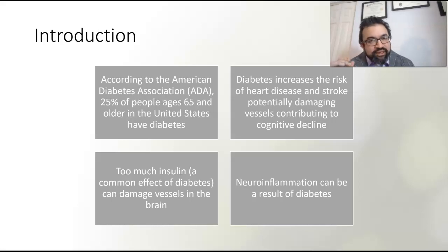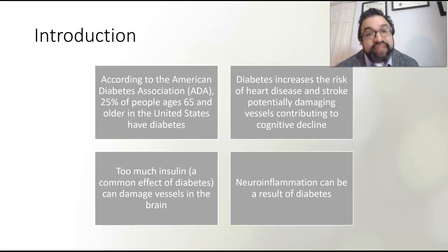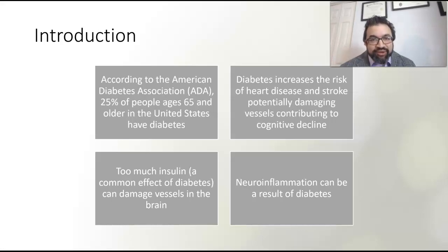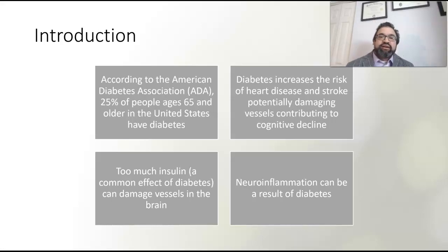Not only that, we know pathophysiologically that diabetes is directly injuring blood vessels — not only throughout your body but within your brain — potentially causing endothelial damage. Additionally, excessive insulin can cause damage in the vessels, and there is also inflammation. Neuroinflammation is an extremely important area to focus on as a potential common pathway between diabetes and cognitive decline.